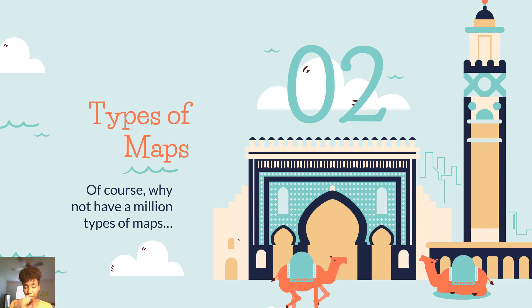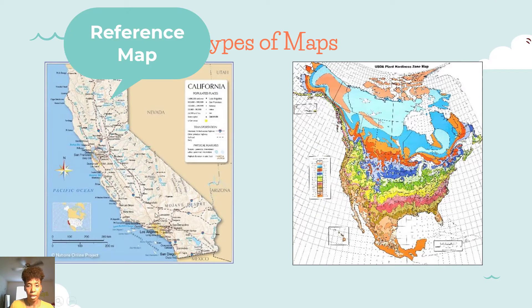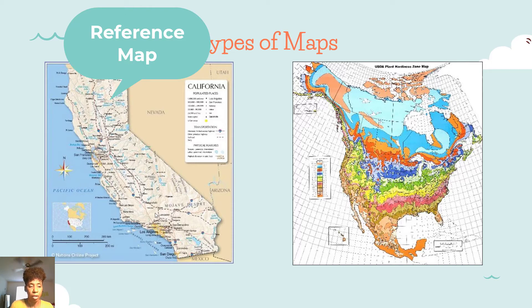So there are two types of maps. The first is called a reference map. A reference map shows different features such as roads, mountains, transportation, physical features, populated areas, and other features that are necessary to reference. So if you're going on a trip, you would use a reference map because you need to know how to get to certain places.